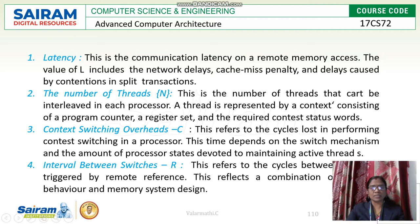The second important feature is number of threads, defined as capital N — the number of threads that can be interleaved in each processor. A thread is represented by a context consisting of a program counter, register set, and a required context status word. These parameters should be associated with each thread in a multi-threaded environment.